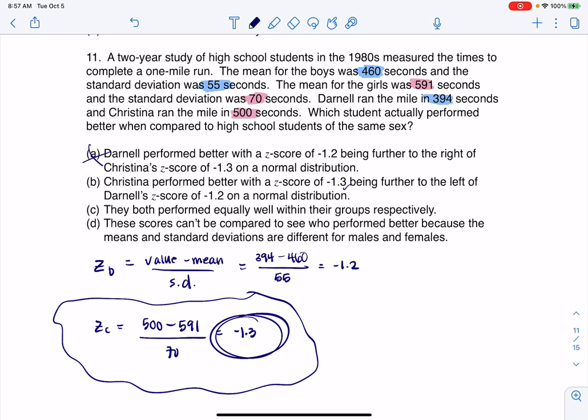Let me just draw the standard normal curve. Here's a z-score. We know zero is under the mean. So Darnell is somewhere around here at negative 1.2, and Christine is down here at negative 1.3. So she's even further to the left. That's why it's saying left, because we're going this way. So she's further left on that z-axis. So that is the correct answer here.